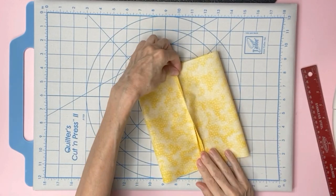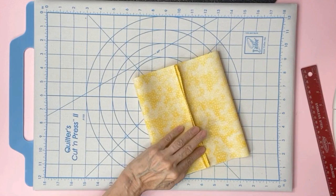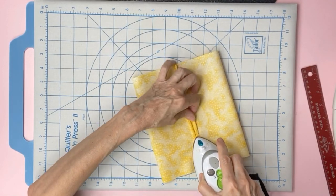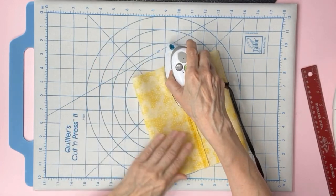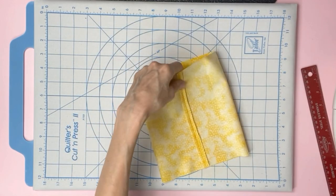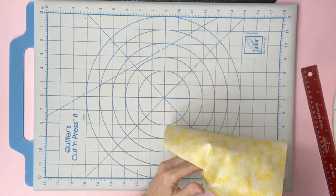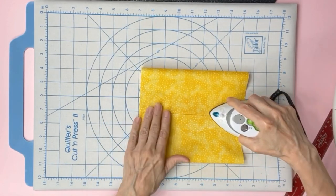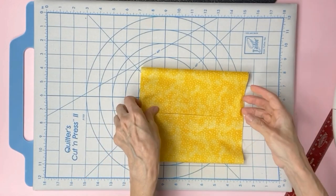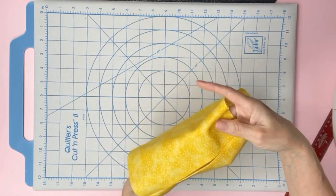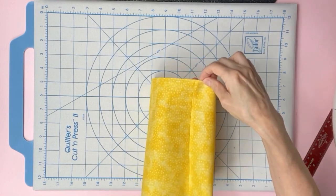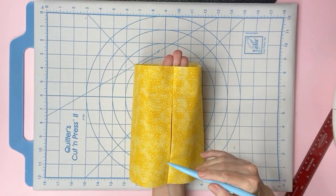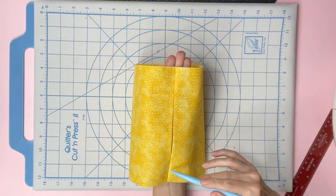Press the seams open with your fingers. Grab your iron and press. We'll turn it inside out, and this is optional if you want to press this side. Take it to the sewing machine and give it a top stitch on each side. Go straight down here and straight down here.